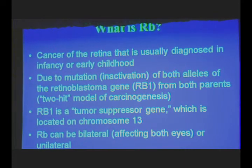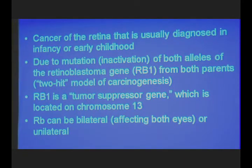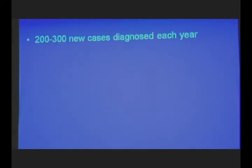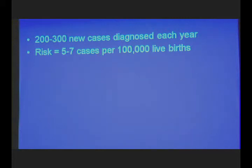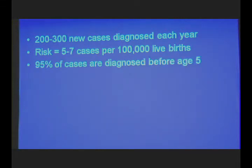The disease itself can be bilateral, affecting both eyes, or it could be unilateral. The incidence — the extent to which new cases occur — is a very rare phenomenon. In the United States each year, there are about 200 to 300 new cases of retinoblastoma, and the risk is approximately 5 to 7 cases per 100,000 live births. Most of them get diagnosed before the age of 5.